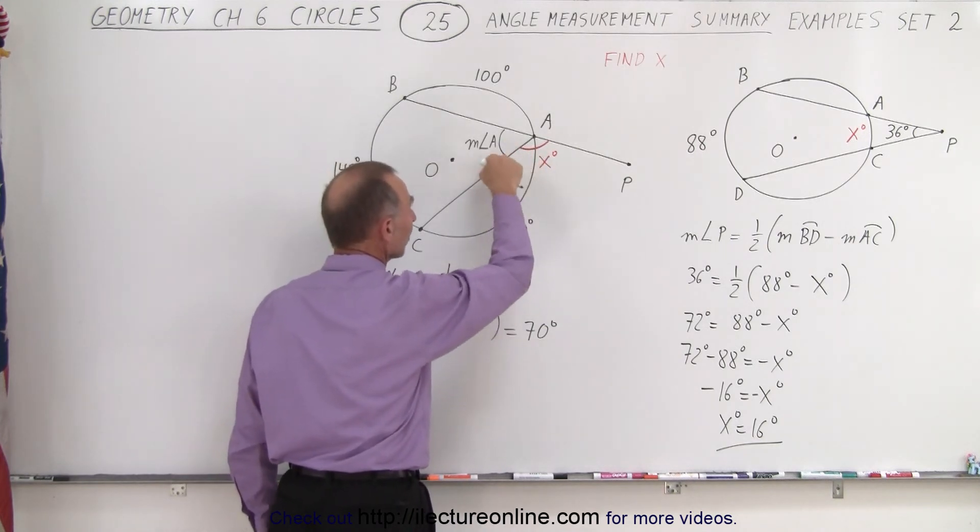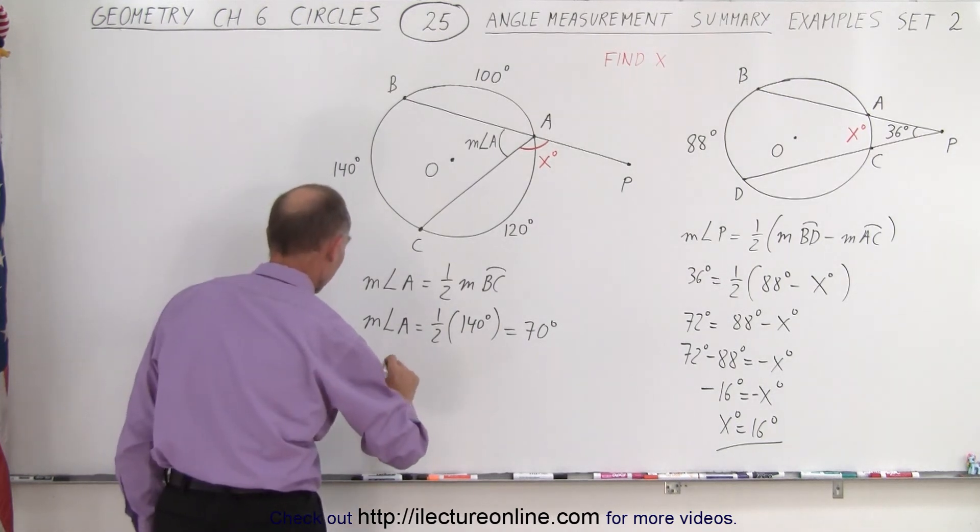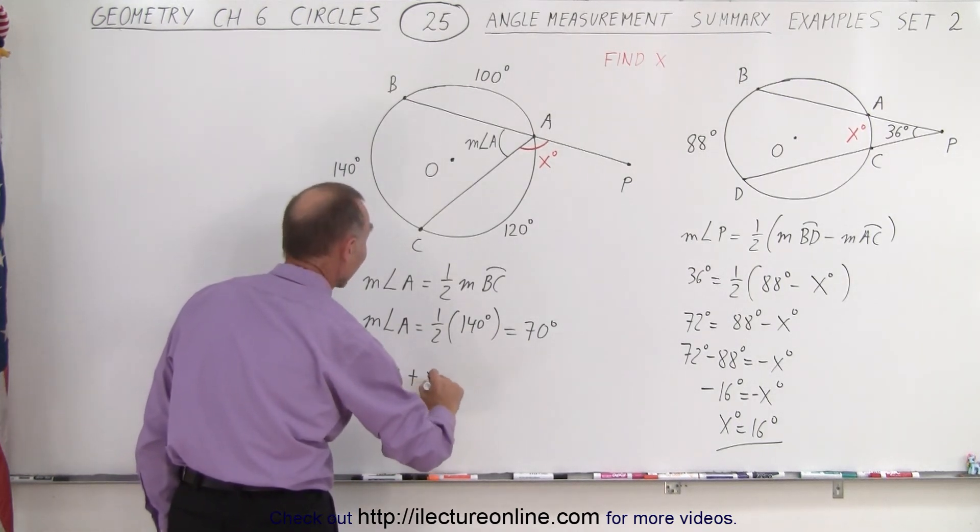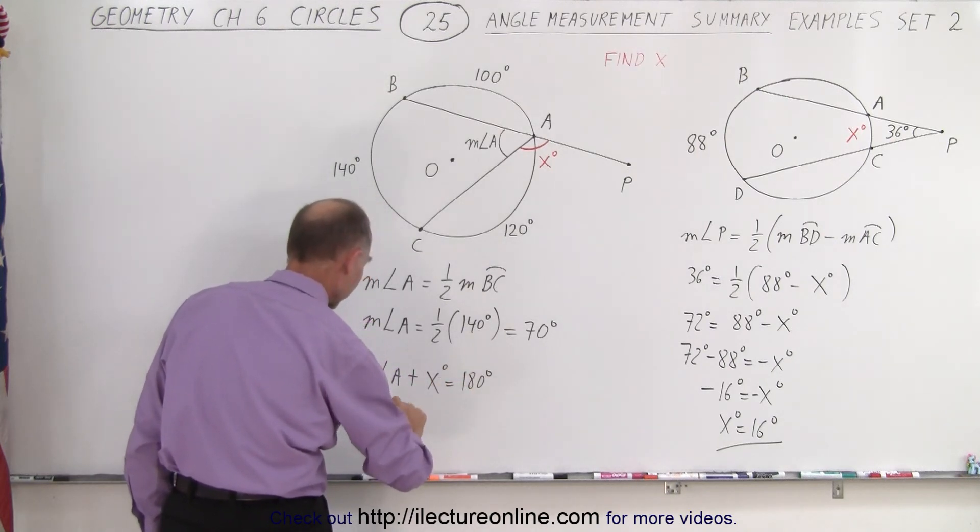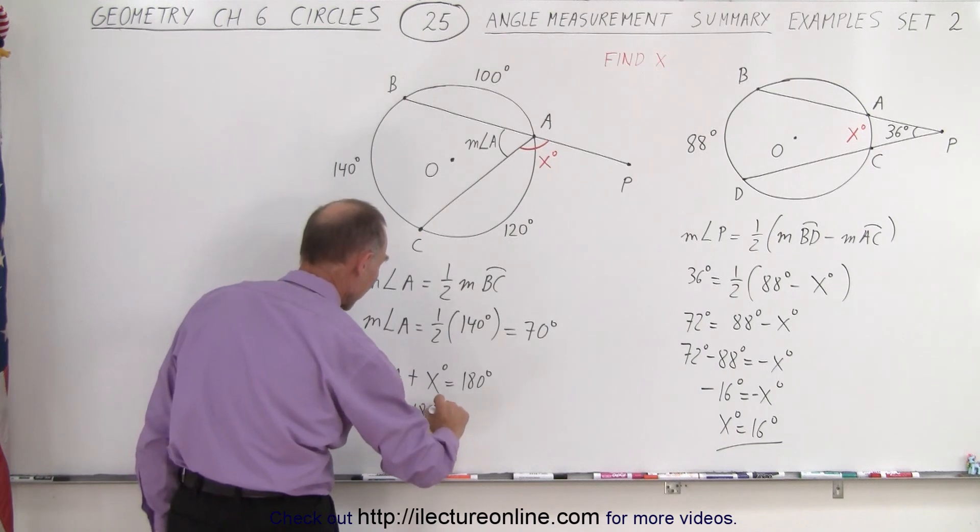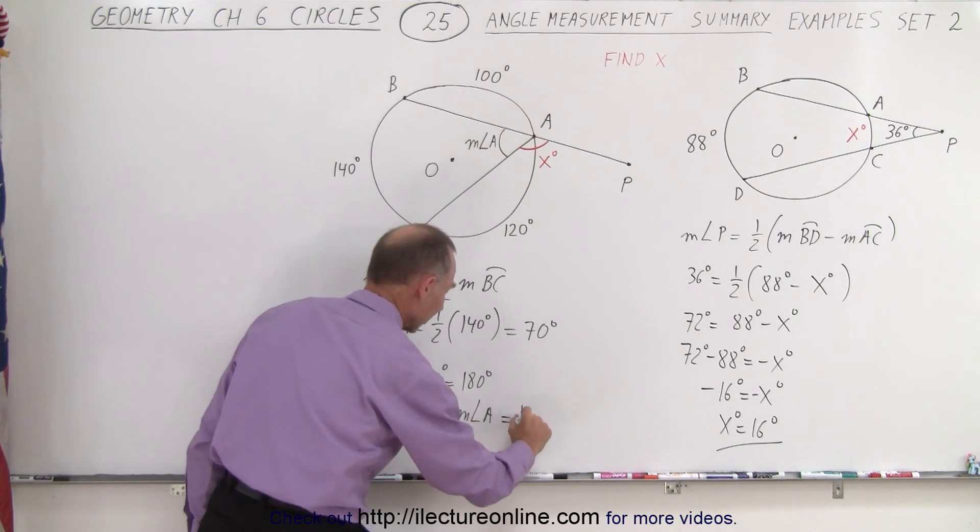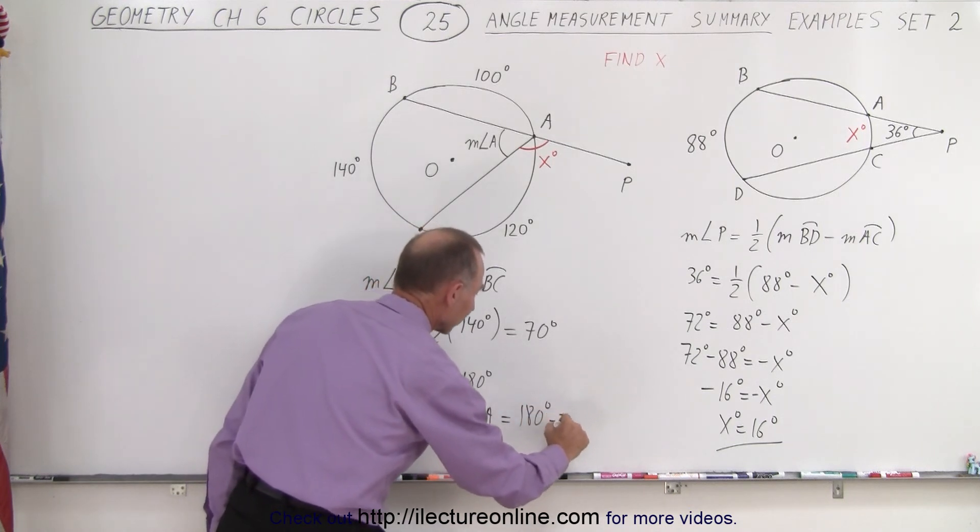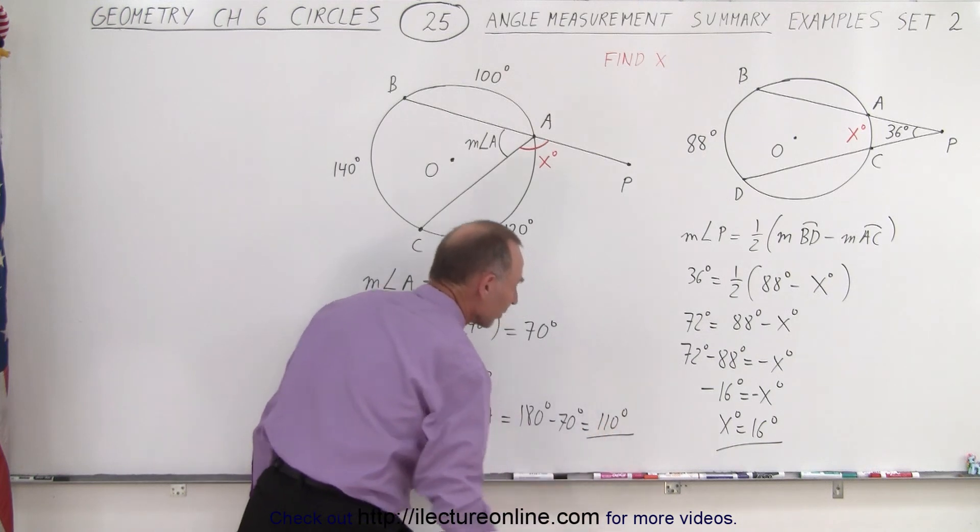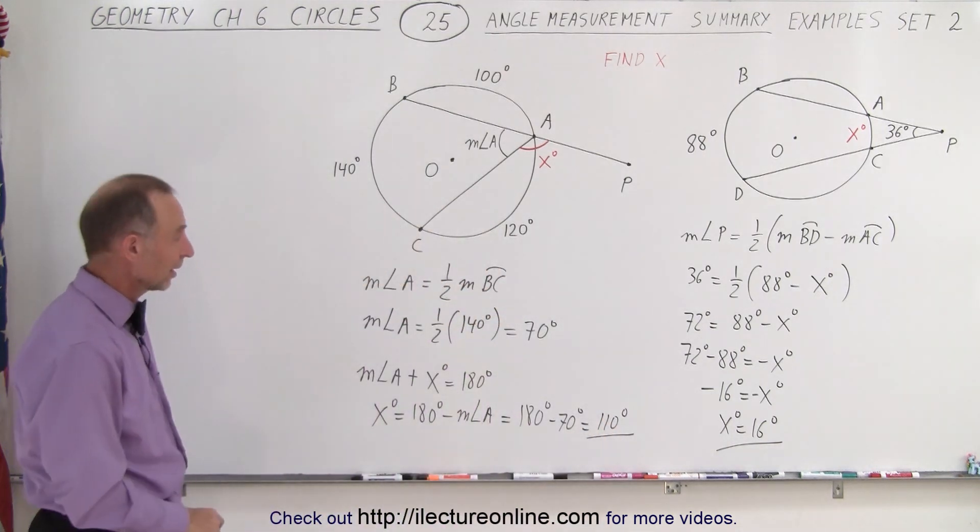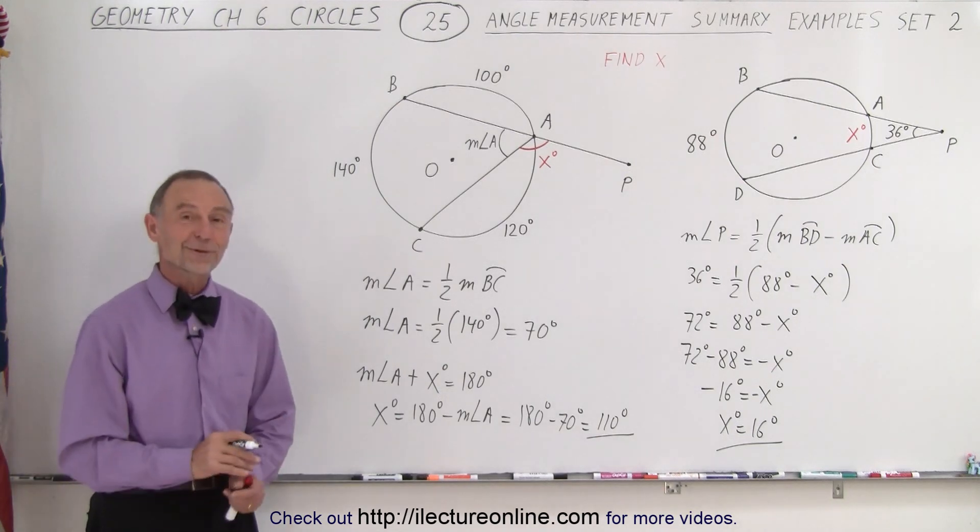And so these two are what we call supplementary angles. So therefore we can say that the measure of angle A plus x degrees must equal 180 degrees, which means that x degrees equals 180 degrees minus the measure of angle A, which of course now we know to be 70 degrees, so that's 180 degrees minus 70 degrees, which is 110 degrees. So that's the value for x. In the second example here, x equals 110, and that is how it's done.